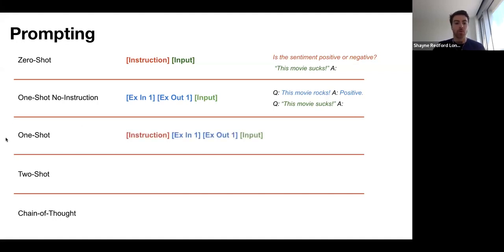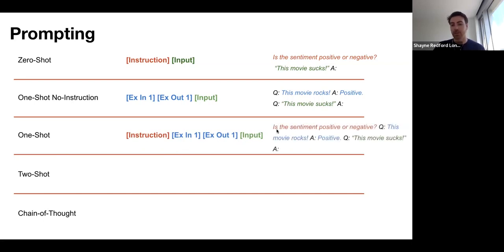The more typical way of doing a one-shot prompt is to give the instruction, followed by the input-output example, and then the new input. You can see color-coded: 'Is the sentiment positive or negative' is the instruction, then the input example, the output example, and then the new example that we care about — where we're hoping the model will make a correct classification.